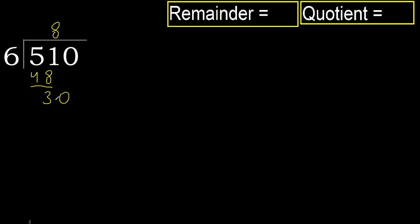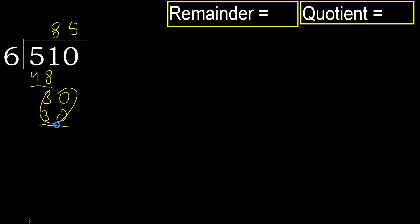Next, bring down: 30. 6 multiplied by 5 is 30, which is not greater. Subtract: remainder is 0. There is no next digit, therefore we finish.